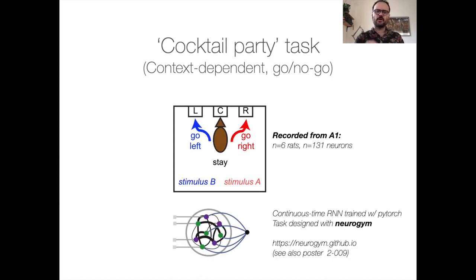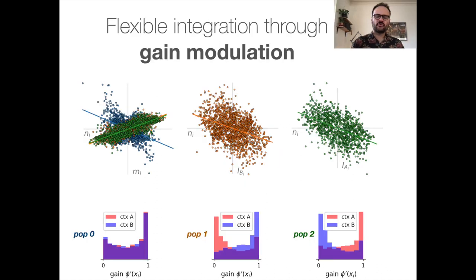So we train both rats and RNNs to solve context-dependent tasks. And this is a task that we study. I don't have time to go into details, but essentially, there are two sets of stimuli that are always present. And both the animals and the task has to ignore one of the stimulus and integrate the other, depending on which context they are in. So now we can go in and try to understand what are the computations that this network performed to solve the task.